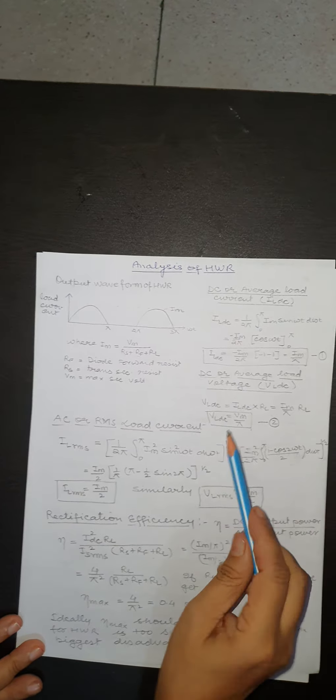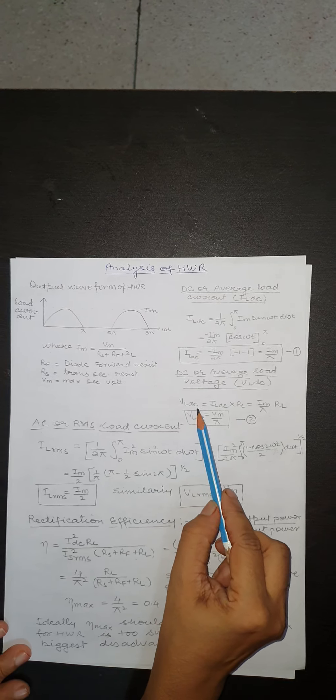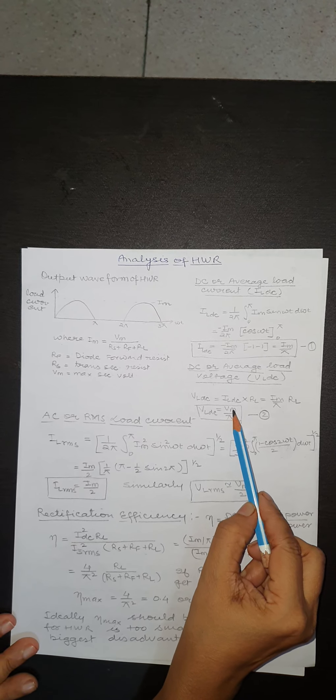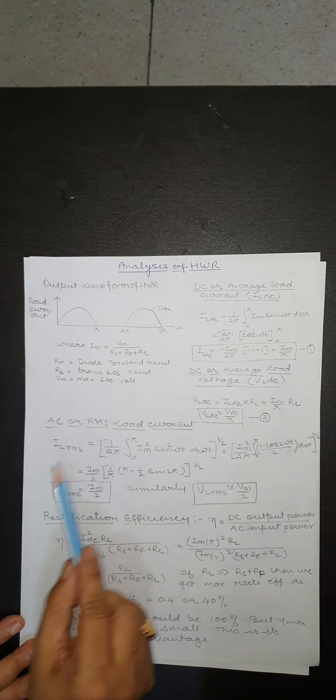Second parameter is VL,DC or average load voltage. VL,DC is given by IL,DC multiplied by RL and it is given by Vm/π. Next is AC or RMS load current.